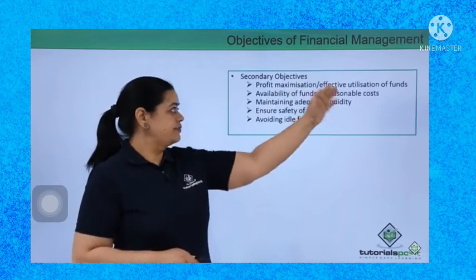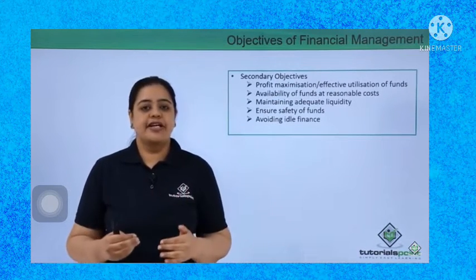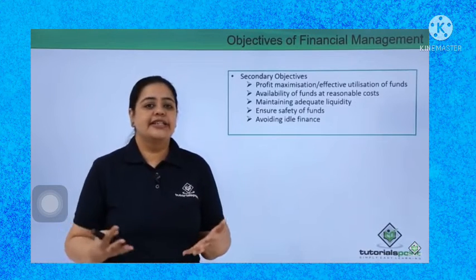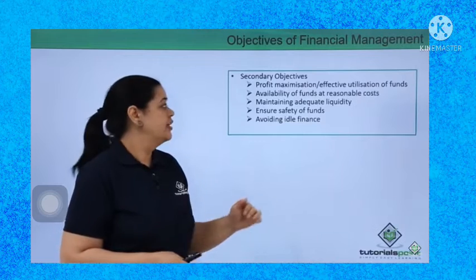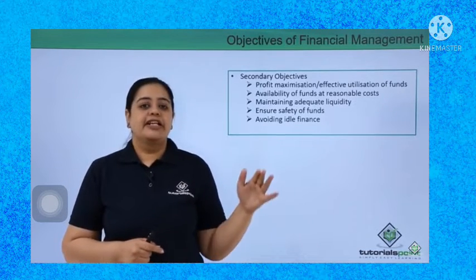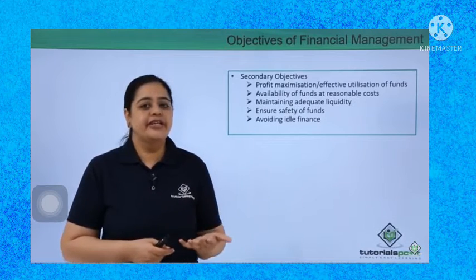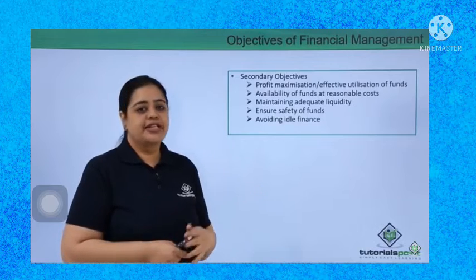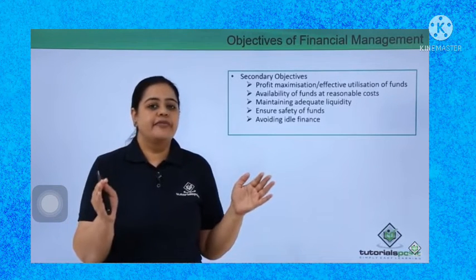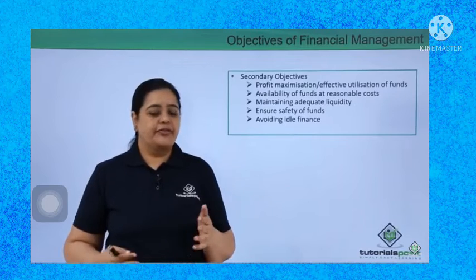Now let us understand the secondary objectives. The secondary objective is profit maximization or effective utilization of funds. Whatever funds you are getting from the market, you need to ensure effective utilization; otherwise, it will result in higher costs compared to the gains. The availability of funds should be at a reasonable cost — it should not happen that you are being charged 25% when the market interest rate is 14%. You should also maintain adequate liquidity so that you are never in a position where you can't purchase raw materials when a customer comes in.